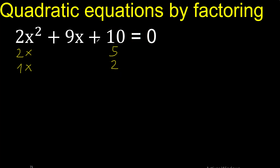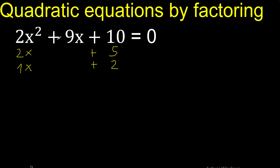Let's try plus. Minus minus is plus, or plus plus is plus. Let's try plus because here is plus. Let's analyze if it is correct like this. 2 multiplied by plus 2 is plus 4.